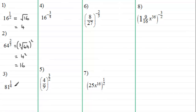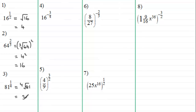Number 3: 81 to the power a quarter. This time we look at the 4 on the bottom, which means we take the fourth root of 81. The fourth root of 81 is 3.